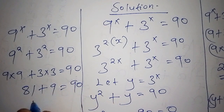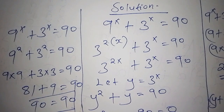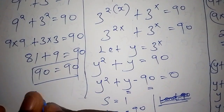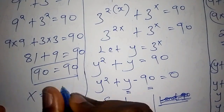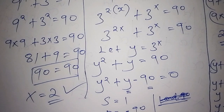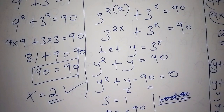81 plus 9 equals 90, which equals 90 — confirmed! So our answer is x equals 2. If this video has added value to you, please give it a thumbs up and subscribe to our channel. See you in our next video. Bye bye — I was your host, Teacher John.